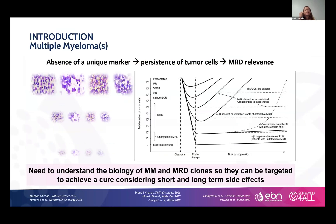Starting with the introduction of the disease: multiple myeloma is a plasma cell disorder with no unique marker that defines it, so the biology is very heterogeneous. It is characterized by a variable clinical outcome. Patients after receiving therapy might have a decrease of tumor cells, and can be characterized by different levels of residual cells. The clinical outcome may be influenced by the quantity and persistence of these tumor cells.